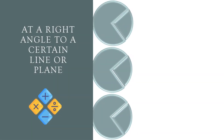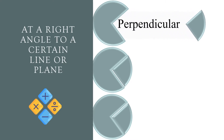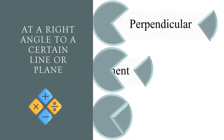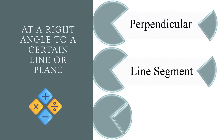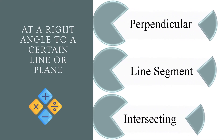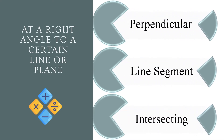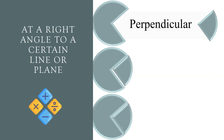At a right angle to a certain line or plane. Perpendicular, line segment, or intersecting? The correct answer is perpendicular.